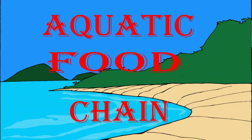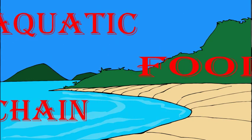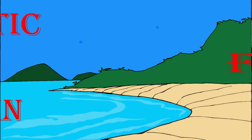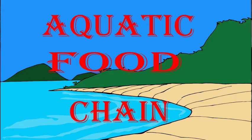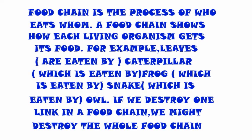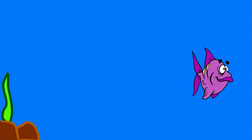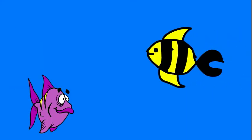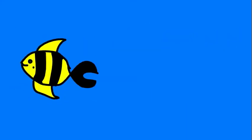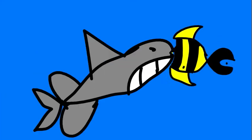Hello, my name is Malkata Sasharan of class 5th E. I am going to show my project regarding the process of food chain. Food chain is the process of who eats whom. A food chain shows how each living organism gets its food. For example, leaves are eaten by caterpillar, which is eaten by frog, which is eaten by snake, which is eaten by owl. If we destroy one link in a food chain, we may destroy the whole food chain. Thank you.